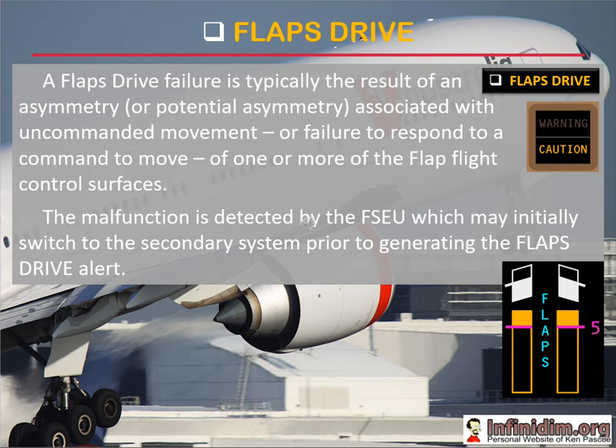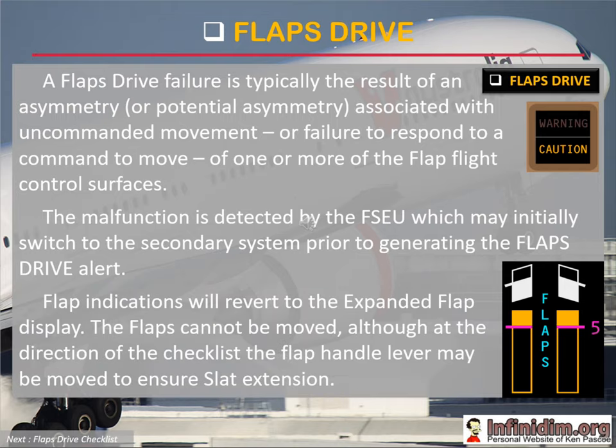According to the FCOM, the FSCU can revert to the secondary system — that's ICAS flaps primary — to attempt to move a flap prior to finally issuing a flaps drive in response to this major flap system malfunction. While it's not quite that simple, it is fair to say that the FSCU is typically unable to prevent an asymmetric flap condition, but certainly does contain any further asymmetry once detected with ICAS flaps drive.